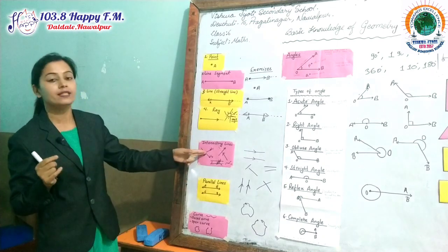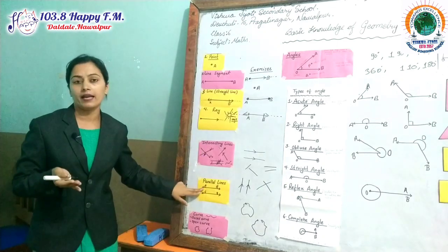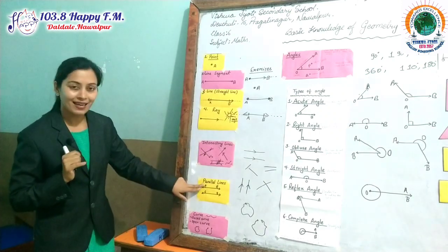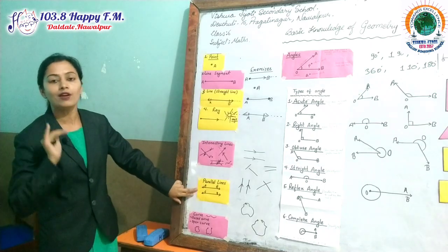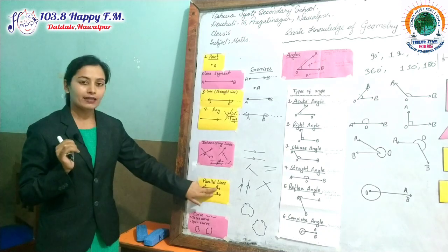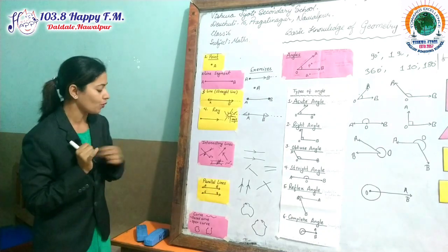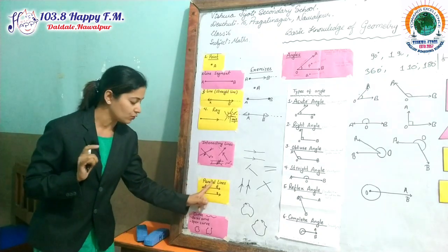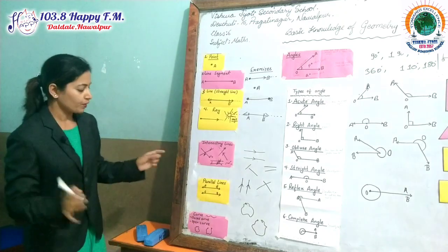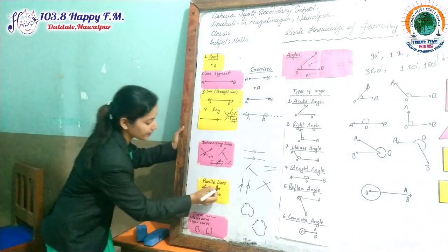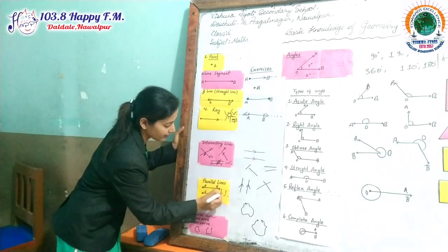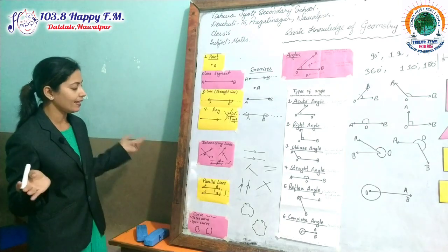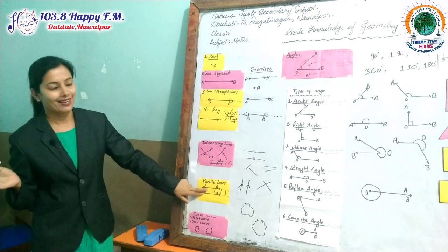The next topic, just opposite of intersecting line, is the parallel line. In an intersecting line there is a common point, but in a parallel line the two lines never meet. The two things to know about parallel lines: they never meet, and the distance between the two lines always remains the same. When we extend them with an equal distance, they never meet. That's why it is a parallel line.